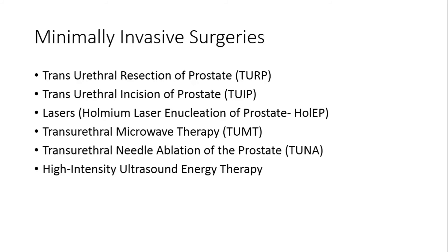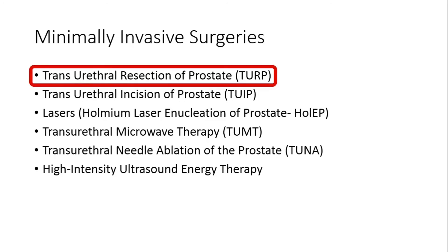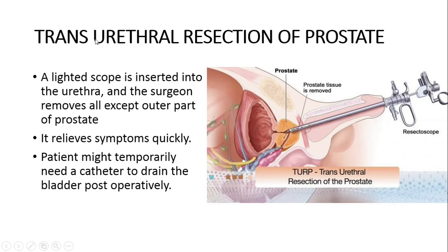Among these, the gold standard and academically most important is TURP, which we will discuss in the next slides. In TURP, we use a lighted scope transurethrally to resect the prostate gland except the outer part. This helps remove symptoms very quickly, and the patient may temporarily need a catheter to drain the bladder post-operatively. Since hemostasis is also needed post-operatively, we inflate the balloon of Foley's catheter to 30 to 40 ml in case of TURP, unlike the routine 10 ml.